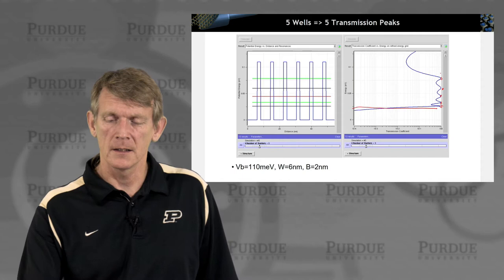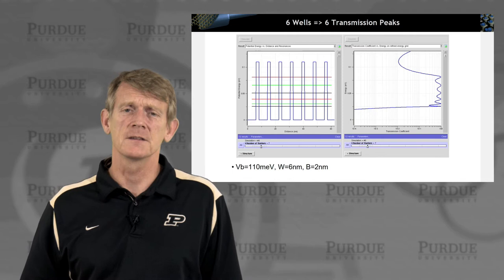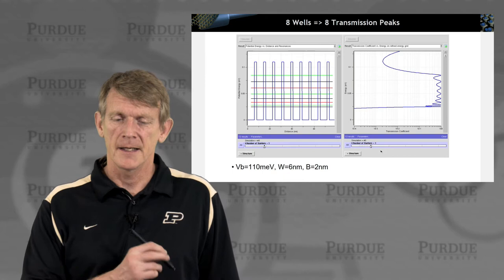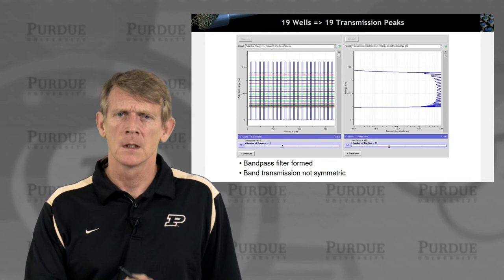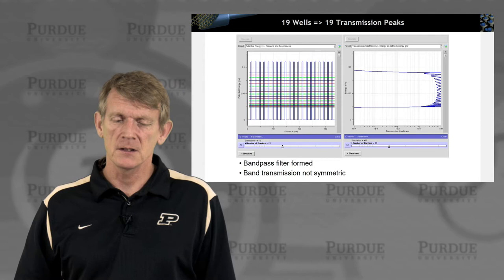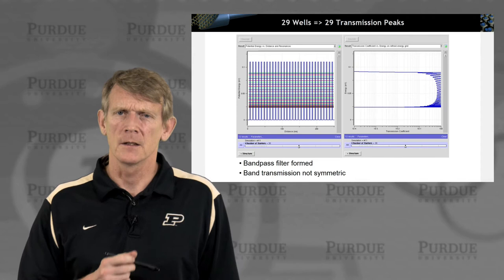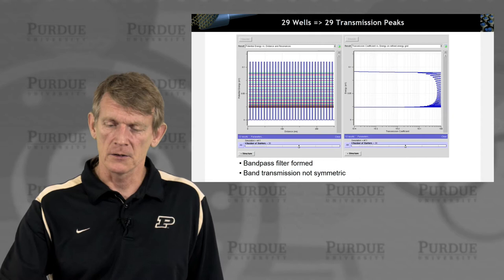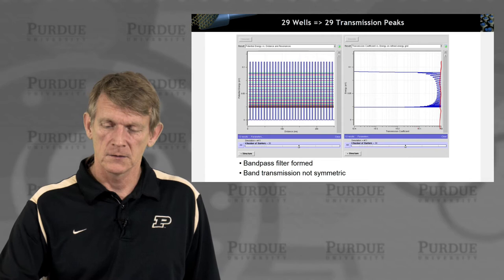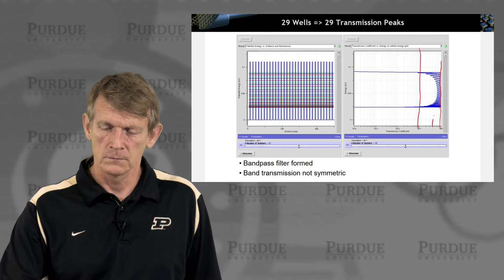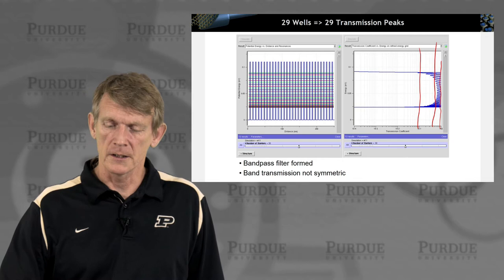I notice that these transmissions are not perfectly symmetric at the lower and upper edge of the band — there is some asymmetry. Continuing: six wells give six transmission peaks, seven and seven, eight and eight, nine and nine. Going up to 19 wells, you really see a very sharp definition of this band emerging, in which transmission over a broad energy range is close to 1 — significantly larger than 0.4 over a significant energy range.